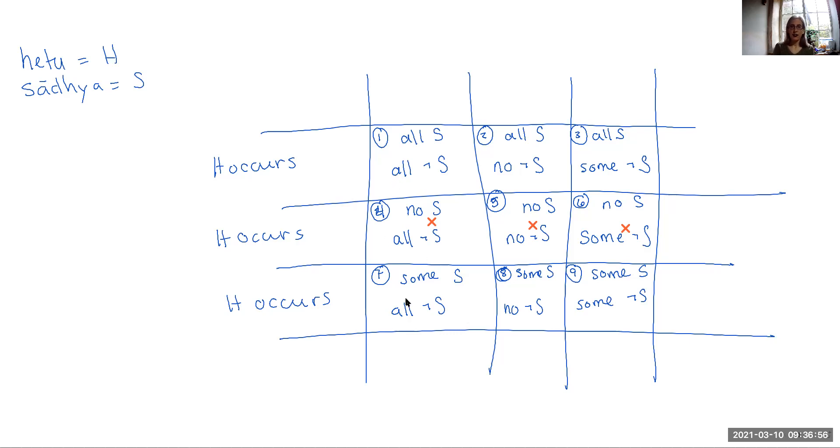Suppose that H occurs in some of the S. So there is a connection between having the Hetu and having the Sadia, but we lack the negative concomitants because it also occurs in everything that doesn't have the target property. So it's not going to be very useful for establishing that you have the target property when there is this close combination between having the ground property and not having the target property. So those cases are also not going to give you good sorts of reasons, justifications. That's gotten rid of about half of our squares. We've got four left. Let's take a look at these.